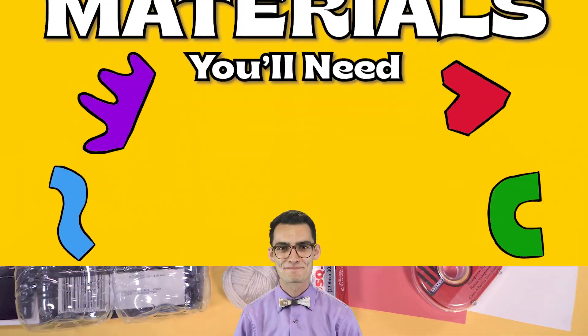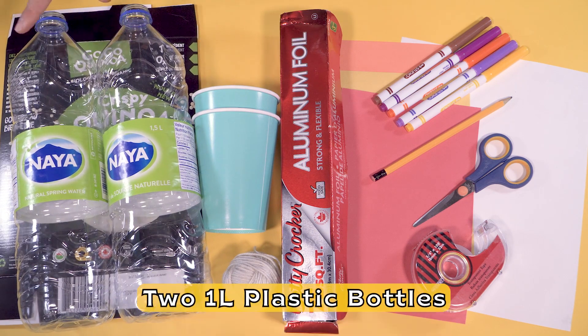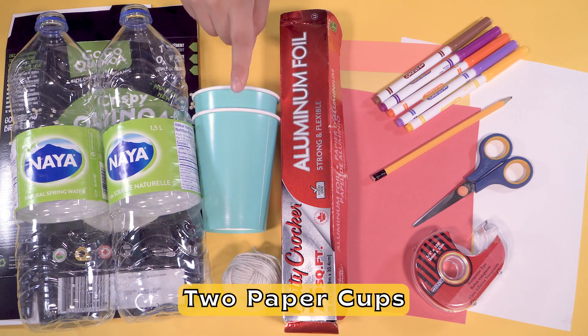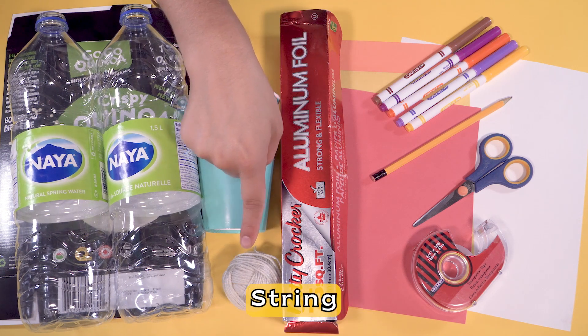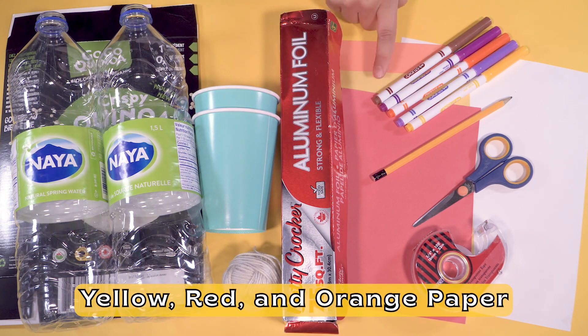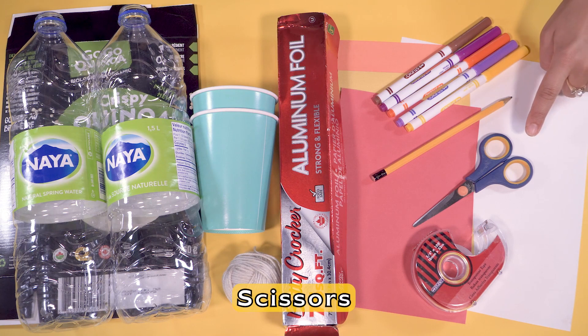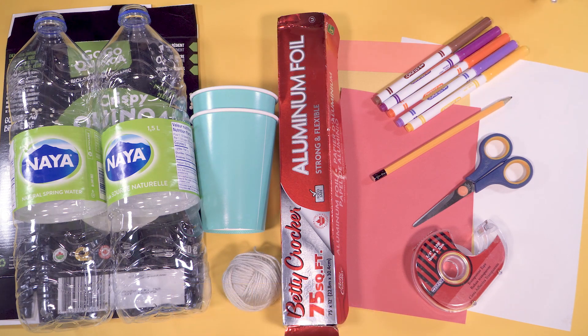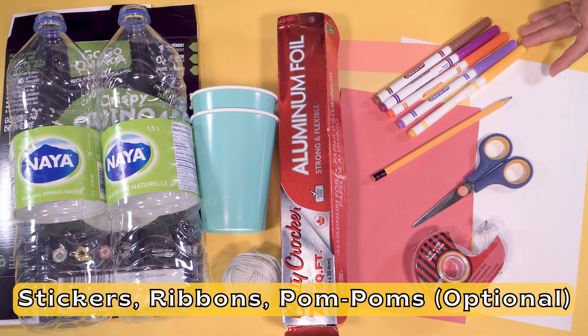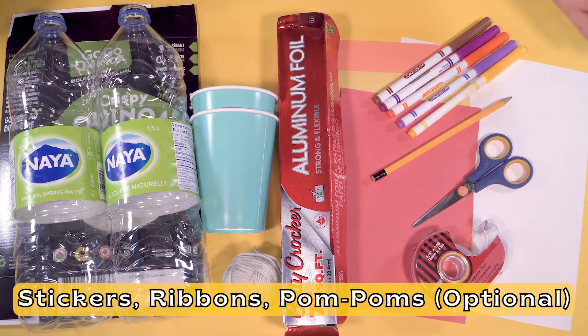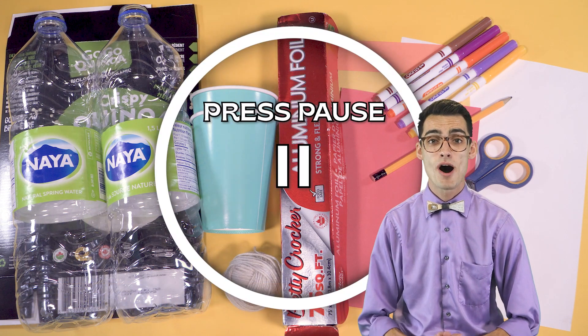Here's what you'll need. One cereal box, two one-liter plastic bottles, two paper cups, a roll of tinfoil, string, yellow, red, and orange construction paper, tape, scissors, a pencil and paper, coloring supplies, I recommend markers, and stickers, ribbon, and pom-poms. These are optional. And if you need more time to gather your materials, press pause now.